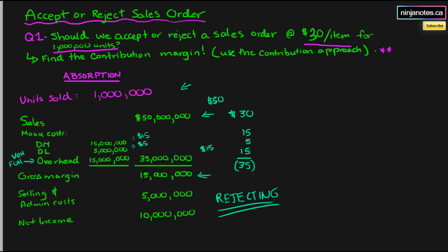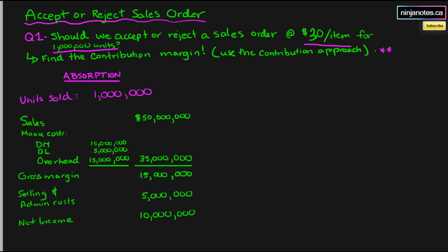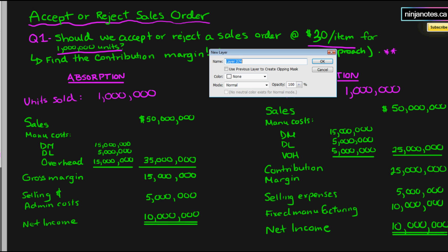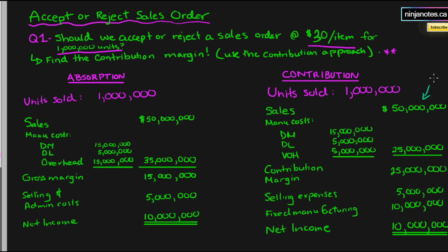Because the contribution margin approach actually only includes the variable cost. So let me create another comment layer. Again we have sales, fifty million dollars, which means we have fifty dollars a unit. Our manufacturing costs are fifteen million or fifteen dollars a unit. Our direct labor is five dollars a unit. Our variable overhead is five dollars a unit.